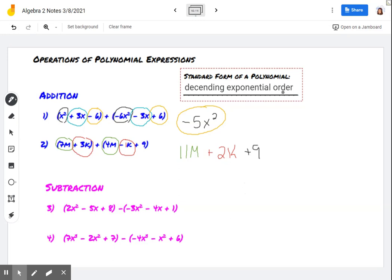Okay. If we're going to talk about descending exponential order too, the variable should technically be in alphabetical order as well. So final answer, 2k plus 11m. They have the same exponent of 1. But k comes before m in the alphabet. And then plus 9. So final answer.